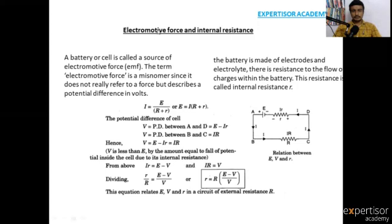What is the relation between electromotive force and internal resistance? From Ohm's law, V = IR, so I = V/R. Here V is the voltage on the battery.